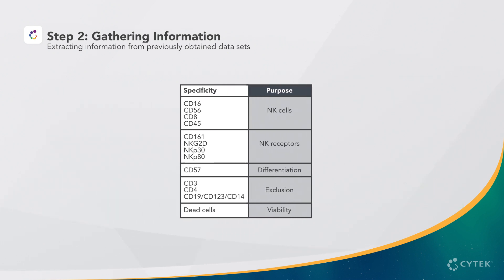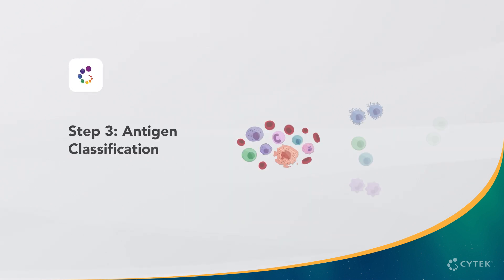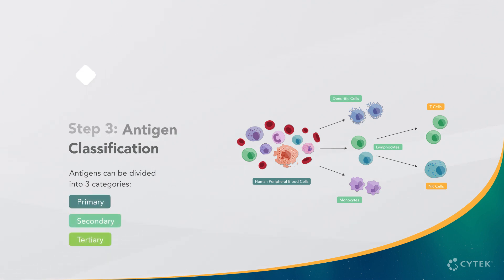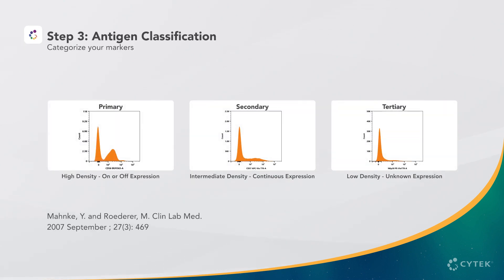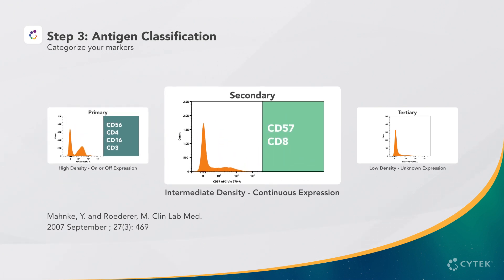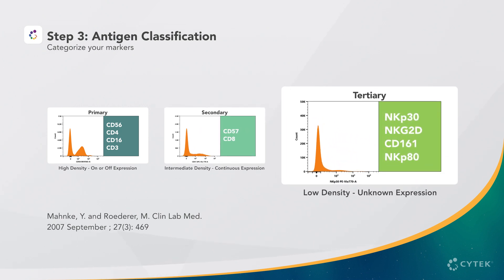Now that we have our list of markers and understand their expression characteristics, we can proceed to Step 3: Antigen Classification. Antigens can be divided into three categories — primary, secondary, and tertiary — as first described in a publication by Monke and Roterer. Primary markers have the highest antigen density, expression is usually on or off, and they identify main subsets, such as CD56 on NK cells. Secondary markers have intermediate or continuous density and are often markers of differentiation, such as CD57 on NK subsets. Tertiary markers are the most important for a given assay — these are the readouts, often with low or unknown density, or expressed in small subsets, such as NKP30 with low positivity.